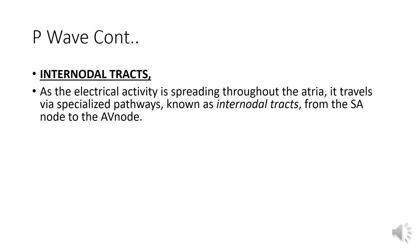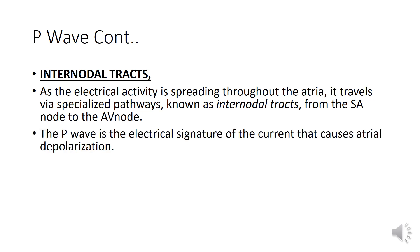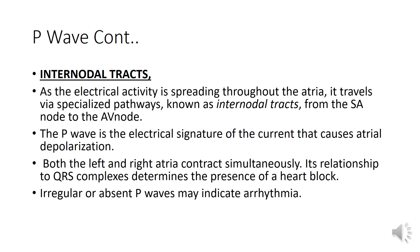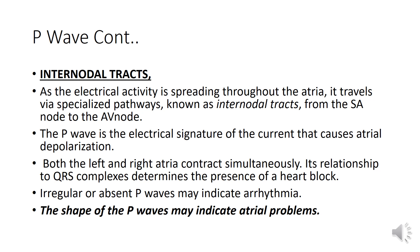Internodal tracts: as the electrical activity spreads throughout the atria, it travels via specialized pathways known as internodal tracts from the SA node to the AV node. The P wave is the electrical signature of the current that causes atrial depolarization. Both the left and right atria contract simultaneously. Its relationship to QRS complexes determines the presence of heart block. Irregular or absent P waves may indicate arrhythmia. The shape of the P waves may indicate atrial problems.